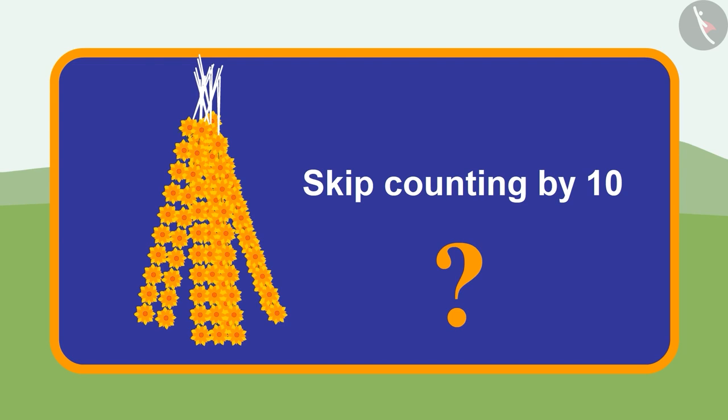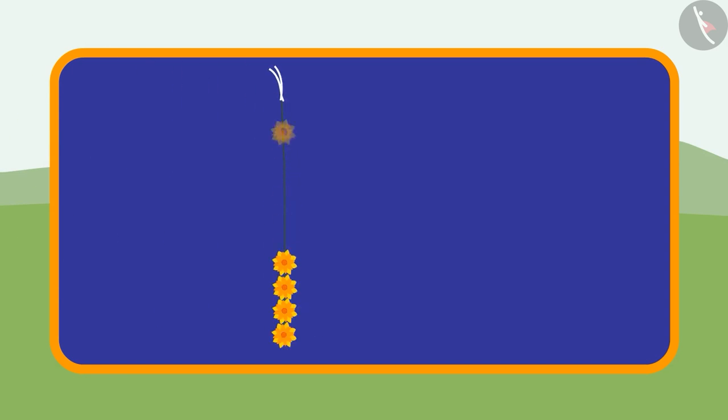Come, let's see how Babloo did this. Babloo had stitched 10 flowers in each string beforehand. Each flower string had 10 flowers stitched in it. Then Babloo counted the flowers like this.